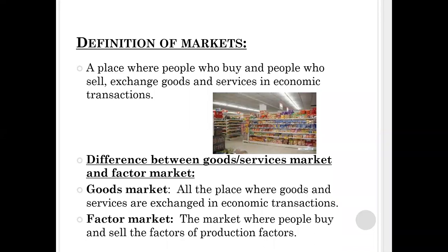So it doesn't matter if it is products, goods, or services — that is going to fall under a goods market. While a factor market is the market where people buy and sell the factors of production. Remember, the factors of production are land, entrepreneurship, capital, and labor. So it is those four factors that are used in the factor market. What is important? The definition of a market: a place where people who buy and people who sell exchange goods and services in economic transactions. And you need to know the difference between a goods market and a factor market.